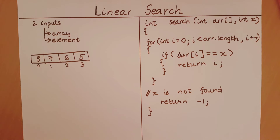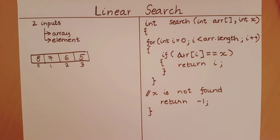Now that we have written the code for the linear search algorithm, let us count the number of primitive operations that this algorithm will perform in its worst case. The worst case arises when the element is not found in the array. We have already previously discussed how to count primitive operations, so let's do it for this algorithm.